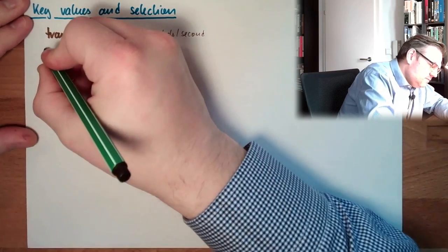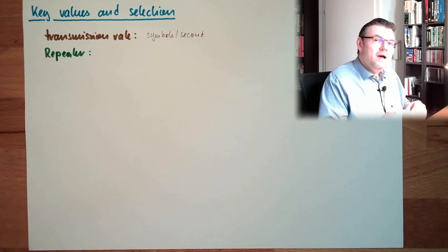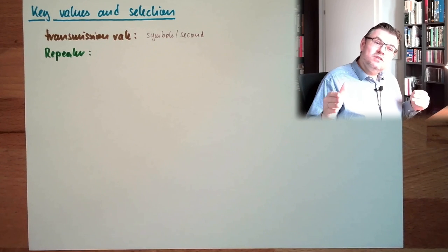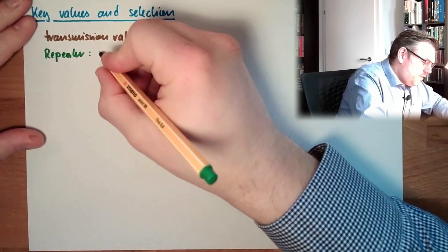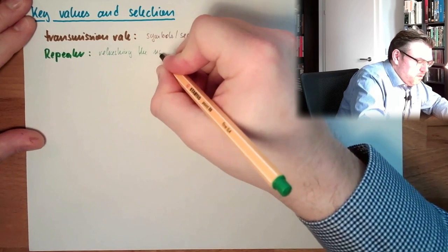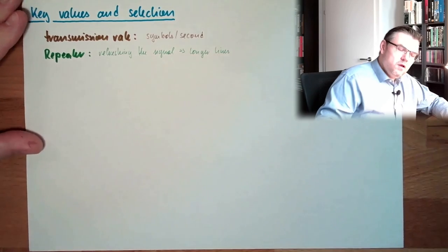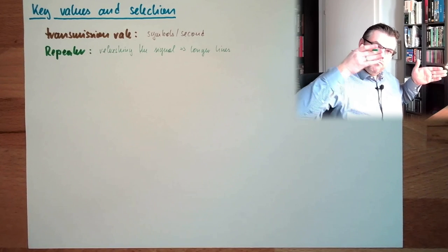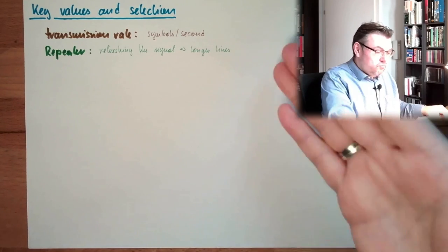Then we have, for instance, the term Repeater. What is a Repeater? A Repeater is repeating what it heard on one side to the other side. It's just refreshing the signal. So it's refreshing the signal. So we can have longer lines. If we have to communicate over a longer distance, then we can put a Repeater in the middle. Then the signal at the Repeater is refreshed. That's a Repeater.